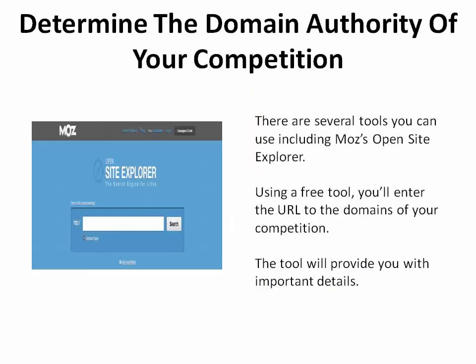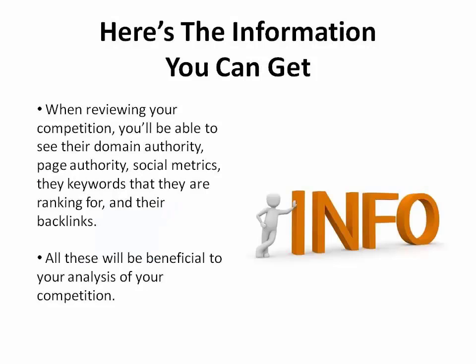Now that you've got a list of competitors, you can move on to the next step. You need to determine the domain authority of your competition. There are several free tools that you can use, including Moz's Open Site Explorer. Using a free tool, you'll enter the URL to the domains of your competition. This tool will provide you with several important details, including their domain authority, page authority, social networks, the keywords that they're ranking for, and their backlinks.